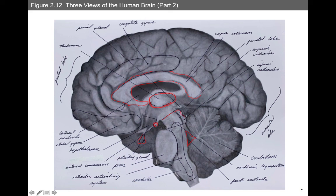The midbrain is divided into two areas: the tegmentum and the tectum. The tectum is comprised of the superior colliculi and the inferior colliculi. The superior colliculi are really important for visual alarm information — if you see something alarming that activates your sympathetic response, the superior colliculi are being activated. The inferior colliculi process auditory alarm information, such as the backfiring of a tailpipe. The pineal gland is an important production site for melatonin, which is involved in sleep cycles.